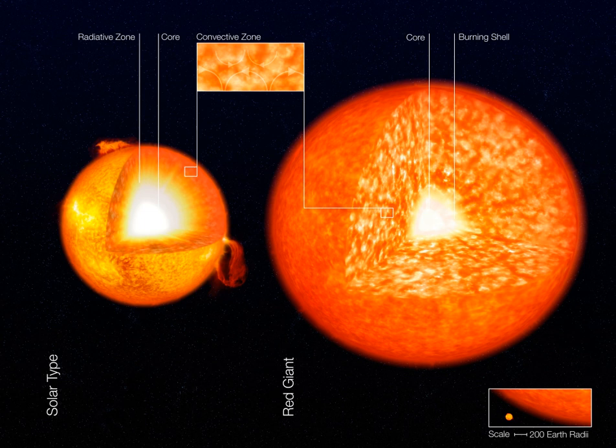Stellar convection consists of mass movement of plasma within the star, which usually forms a circular convection current, with the heated plasma ascending and the cooled plasma descending.